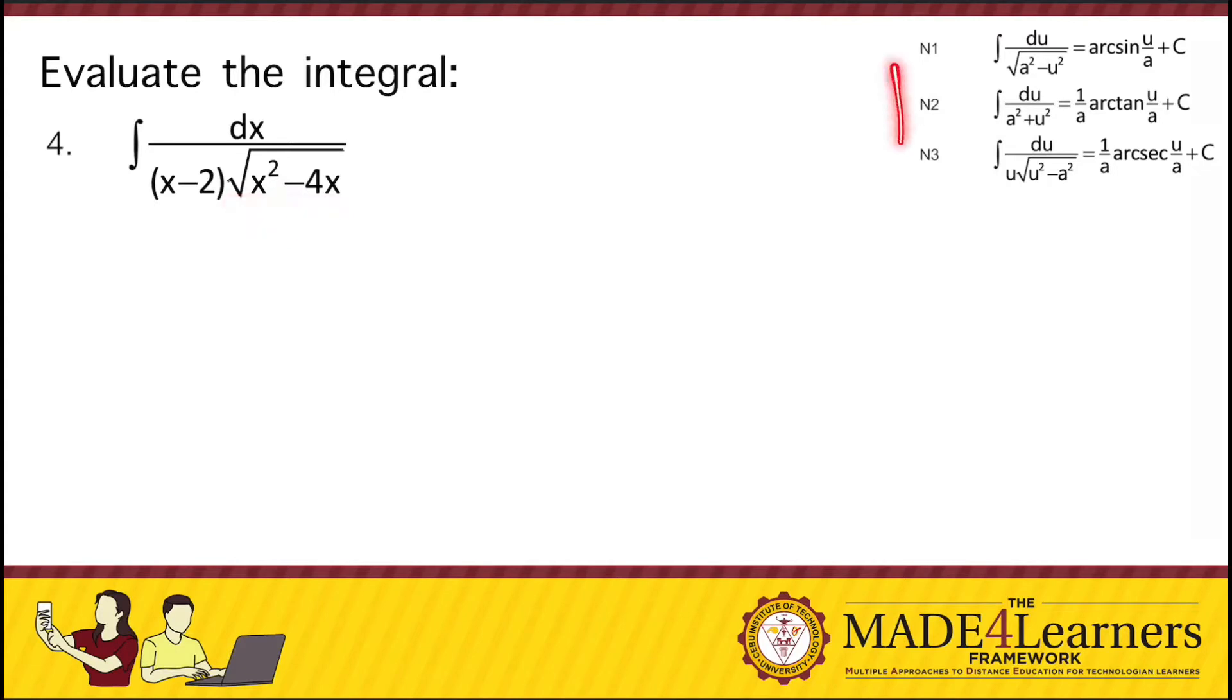Among the patterns here on the right for integrals giving inverse trigonometric functions, we can see that it sort of looks like N sub 3. So we have du over u squared minus a squared. So if we base it there, we can see that u is equal to x minus 2.